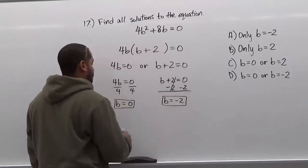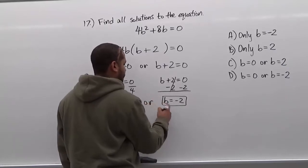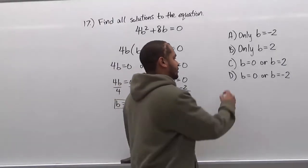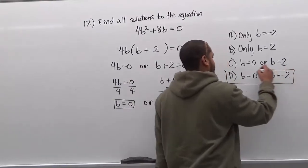So finally, our solution is b equals zero or b equals negative 2, which is the solution for the letter d.